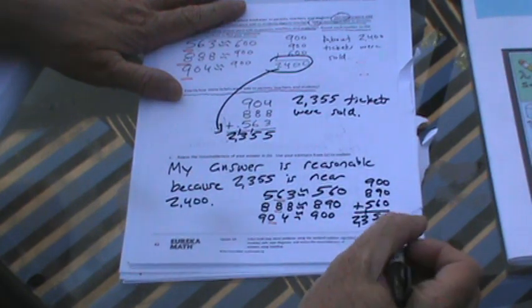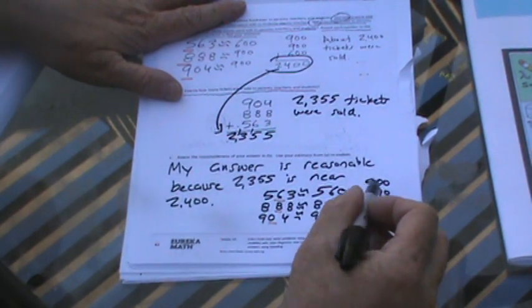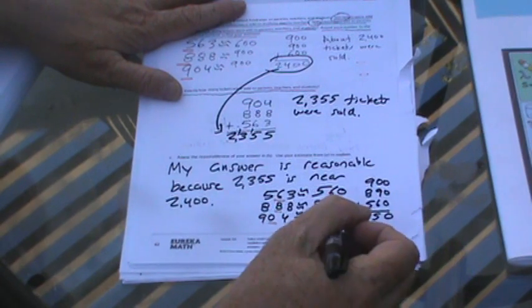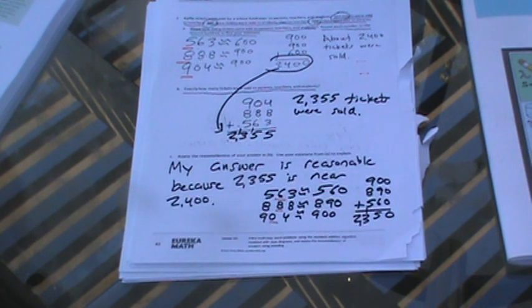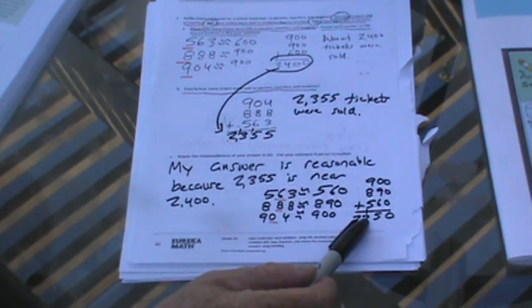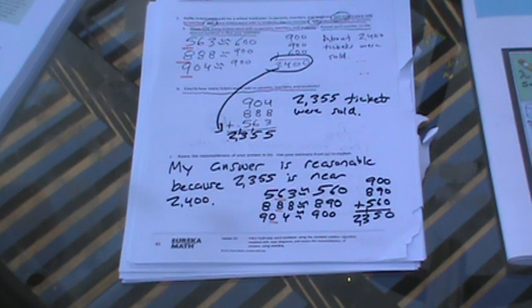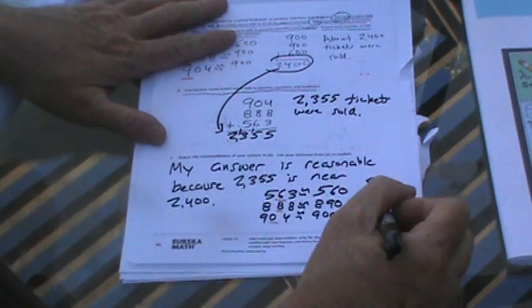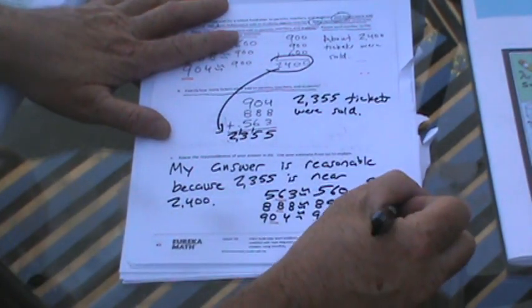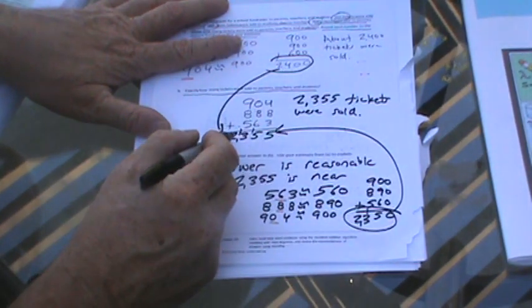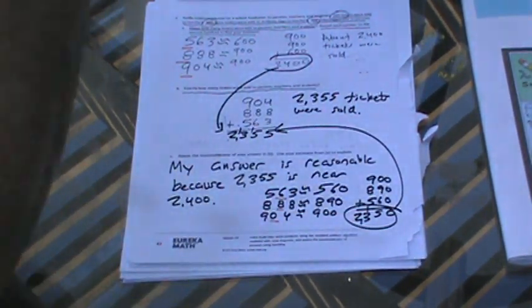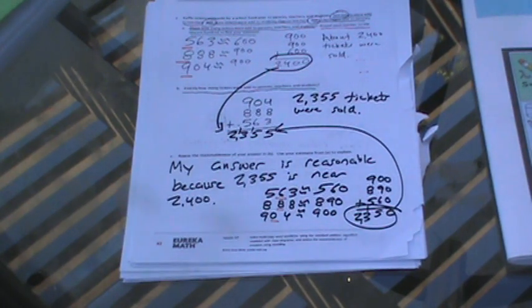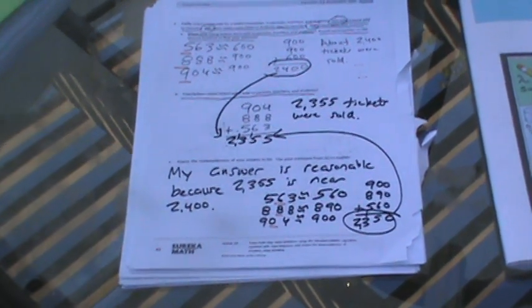Look how close we are. We're only 5 away from 2,355. So there we have it, it was closer than 2,400. Hey, it's the end of the day and Mr. Lee gets a little tired, making a few mistakes, and that's okay because we learn from our mistakes.